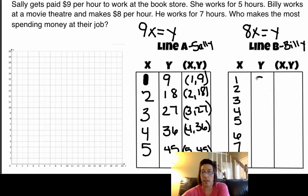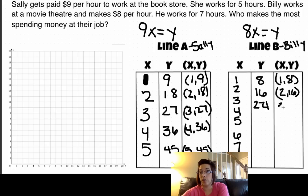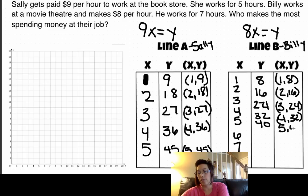So one times eight is eight. Two times eight is 16. Three times eight is 24. Four times eight is 32. Five times eight is 40. Six times eight is 48. And seven times eight is 56.